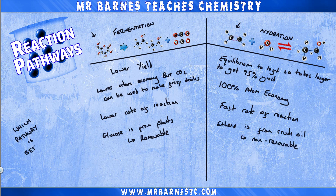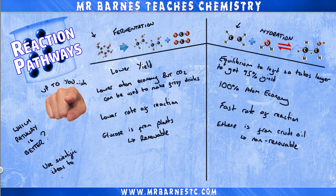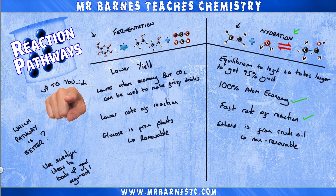So which method should you use? That's really up to you — ish. You would be expected to use scientific ideas to back up your argument, depending on which pathway you chose. For example, if you chose fermentation, you would say it's because the raw materials are renewable and the byproducts can be used to make fizzy drinks, so there's no waste. You'd also mention the downside would be that the yield is lower and it's slower to make. If you chose the hydration of ethene, you would say that it gives 100% atom economy and there's a fast rate of reaction. You'd also say the equilibrium is to the left, which is a disadvantage, but the ethene can be recycled, allowing you to get a high yield.